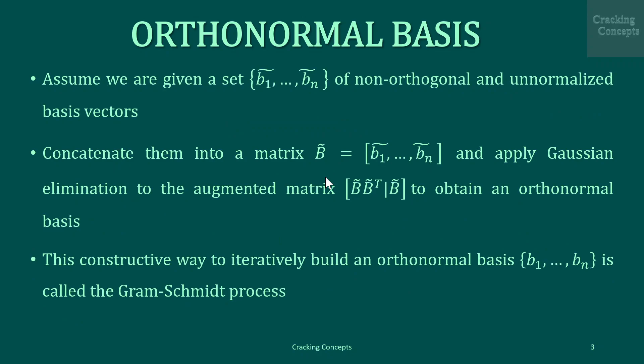Assume that we are given a set b1-tilde to bn-tilde. We apply Gaussian elimination to the augmented matrix given by B-tilde B-tilde-transpose followed by B-tilde to obtain an orthonormal basis. This constructive way to iteratively build an orthonormal basis b1 to bn is called the Gram-Schmidt process.